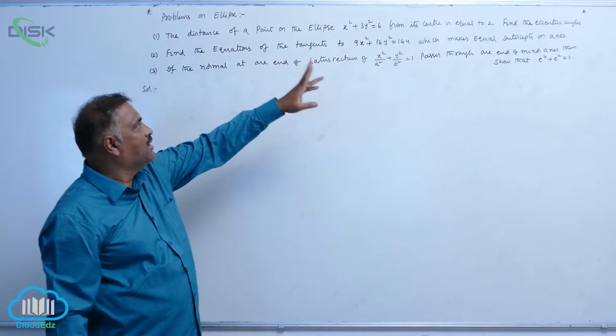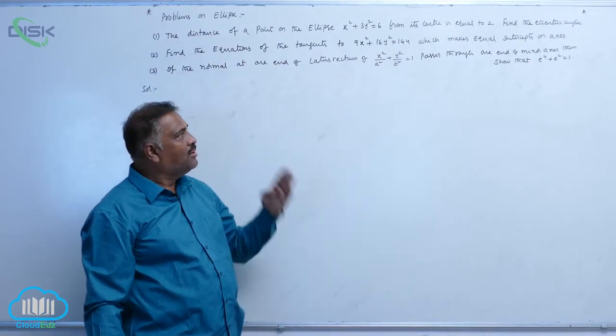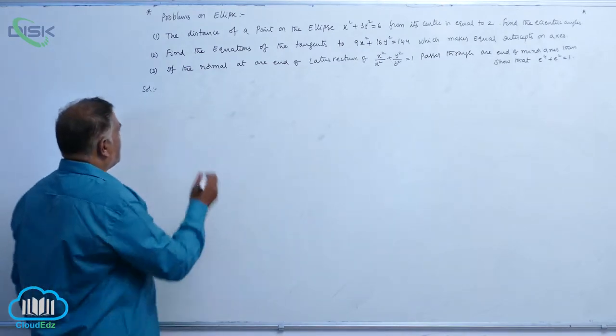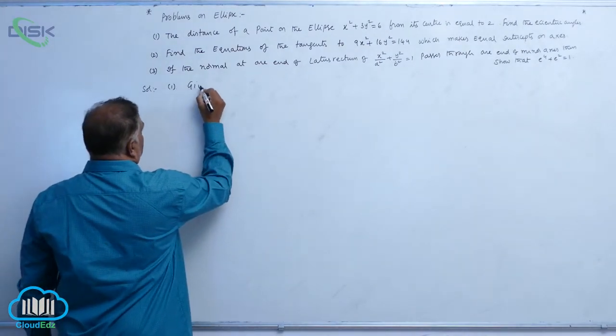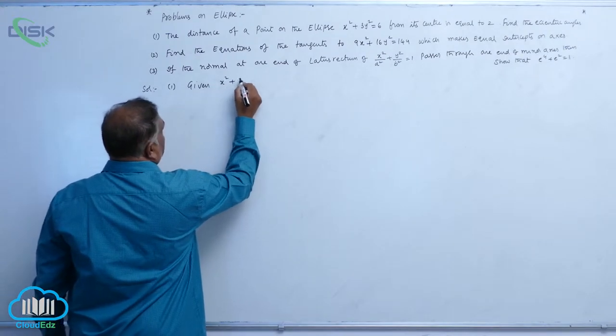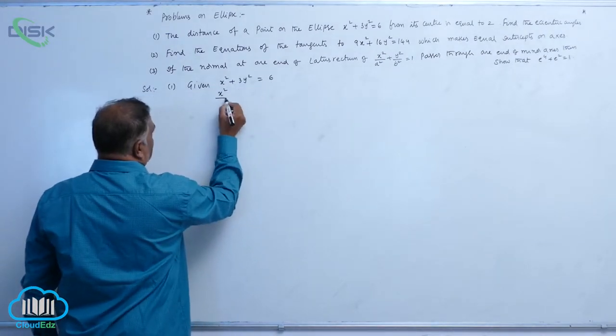The distance of a point on the ellipse from its center is equal to 2. Find the eccentric angles. Let us see one by one. First, given ellipse is x square plus 3y square is equal to 6, which is x square by 6 plus y square by 2 equal to 1.